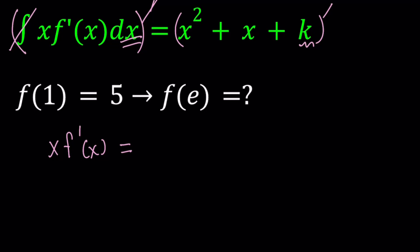So that's going to disappear. The derivative of x squared is 2x plus 1. And the derivative of k is 0.